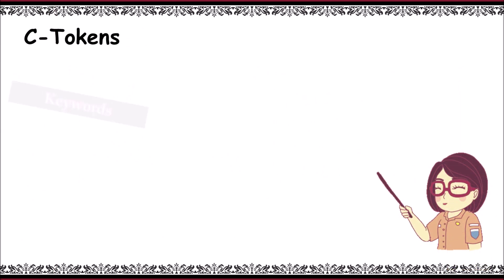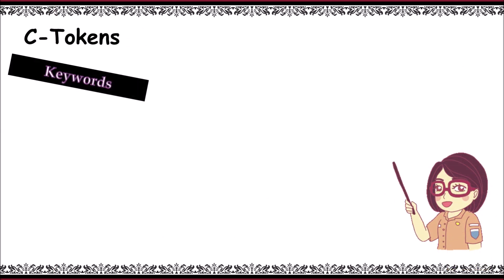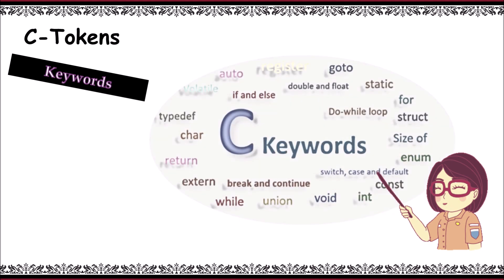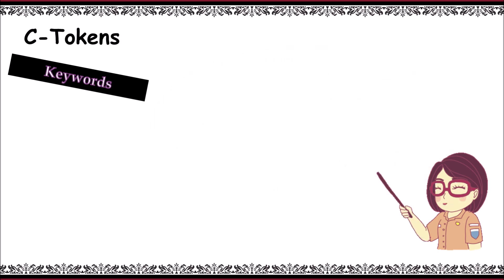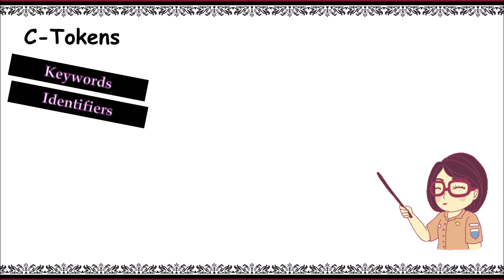C tokens are classified into six categories. The first one is keywords. Just like a dictionary having words with certain meanings, keywords are predefined reserved words. They are called the building blocks of a C program. In total there are 32 keywords.